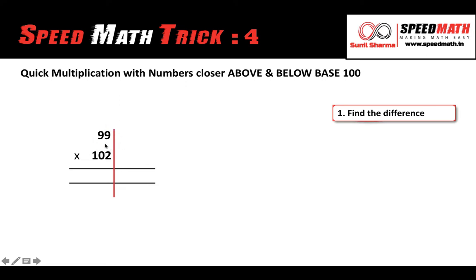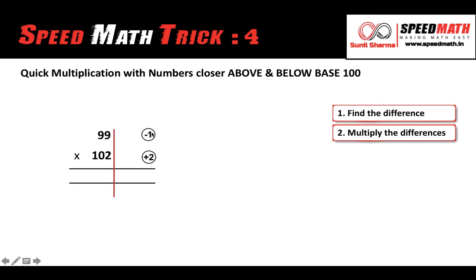Now let me write the difference of each number with 100. 99 is 1 less than 100, so I'm going to write in this circle minus 1, because 99 is less than the base. Similarly, 102 is more than the base and it is 2 more than the base, so in this circle I'm going to write plus 2. Now let's multiply the differences — the numbers in the circles. 2 times 1 is 2, but plus into minus gives you minus, so we get minus 2 on the right-hand side.